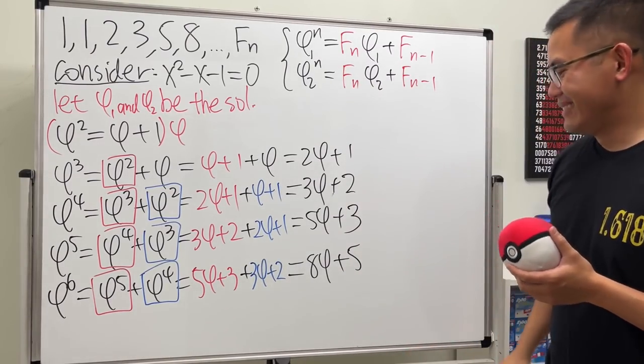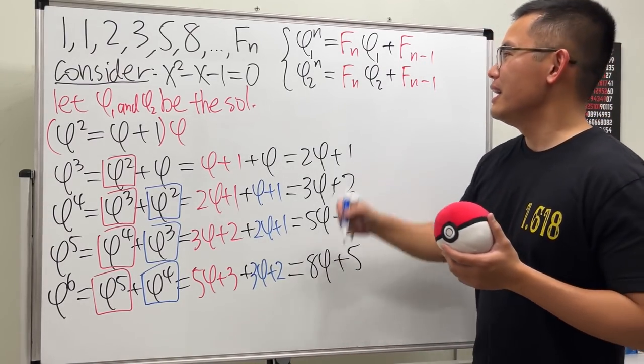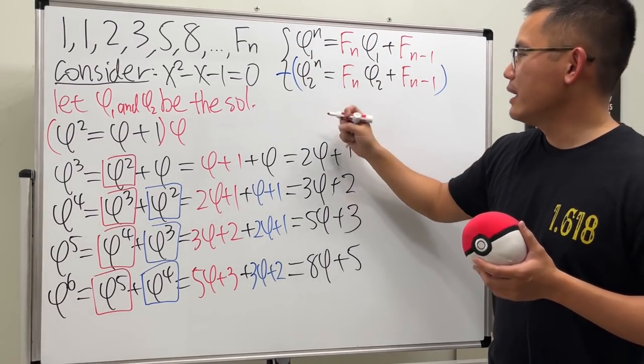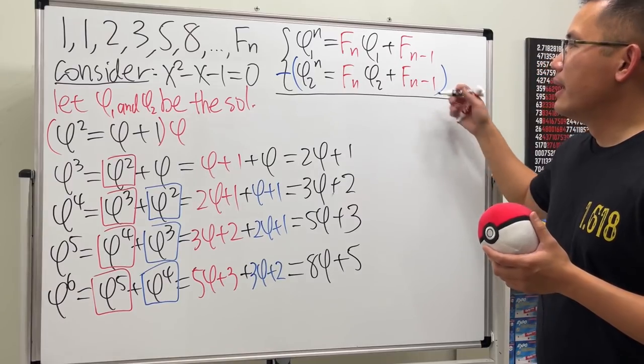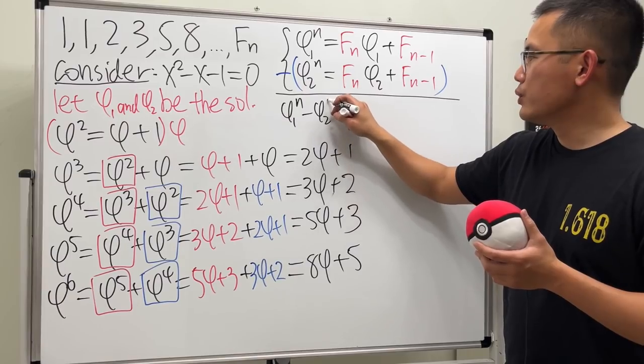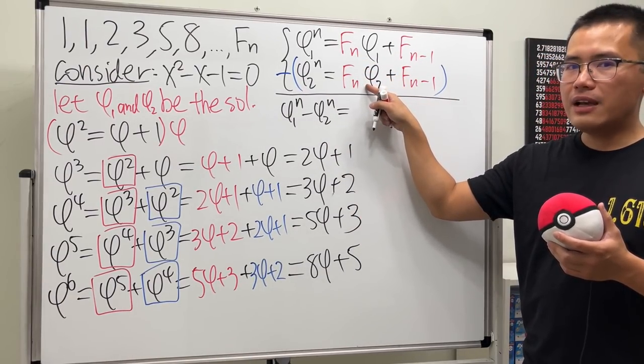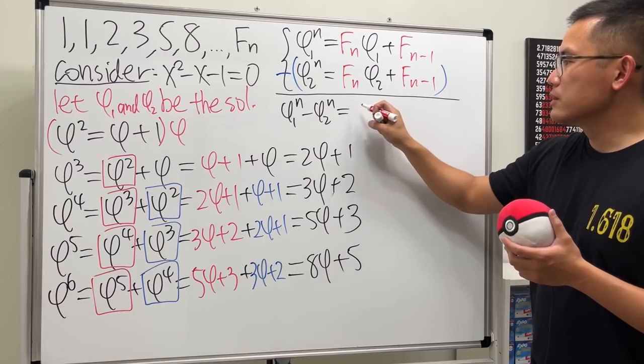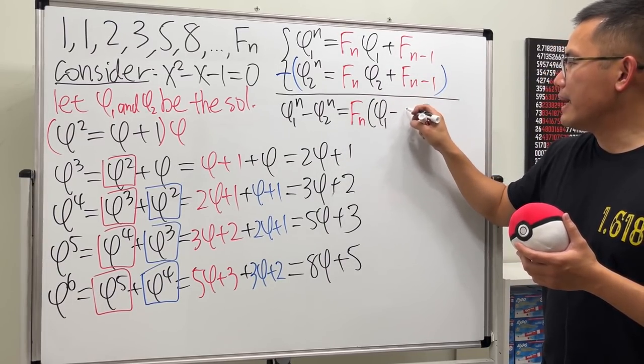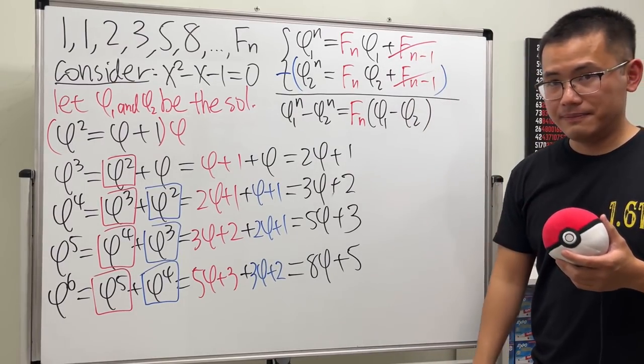Check this out. We have Fₙ minus one. We also have Fₙ minus one. Let's just go ahead and subtract these two equations. I'm just going to do the first one minus the second one. And then we will end up with, on the left-hand side, we have φ₁ to the n minus φ₂ to the n. And then on the right-hand side, both of them have Fₙ, so we can factor that out. So I will just put down Fₙ. And then I will just have φ₁ minus φ₂. And then, of course, this minus that, they cancel out nicely. Cool.